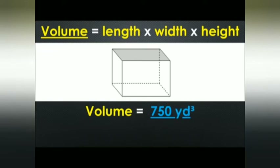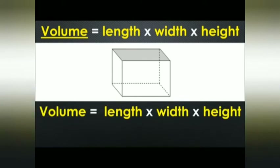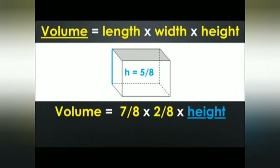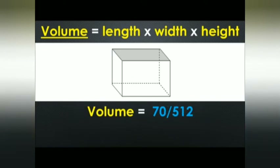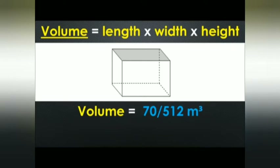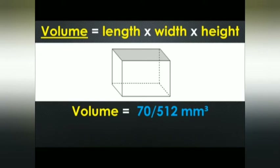With fractions: length = 7/8, width = 2/8, height = 5/8. Multiplying across gives 70/512 units cubed. In the metric system, that would be 70/512 meters cubed, centimeters cubed, or millimeters cubed. That's the end of the video — take care and thanks.